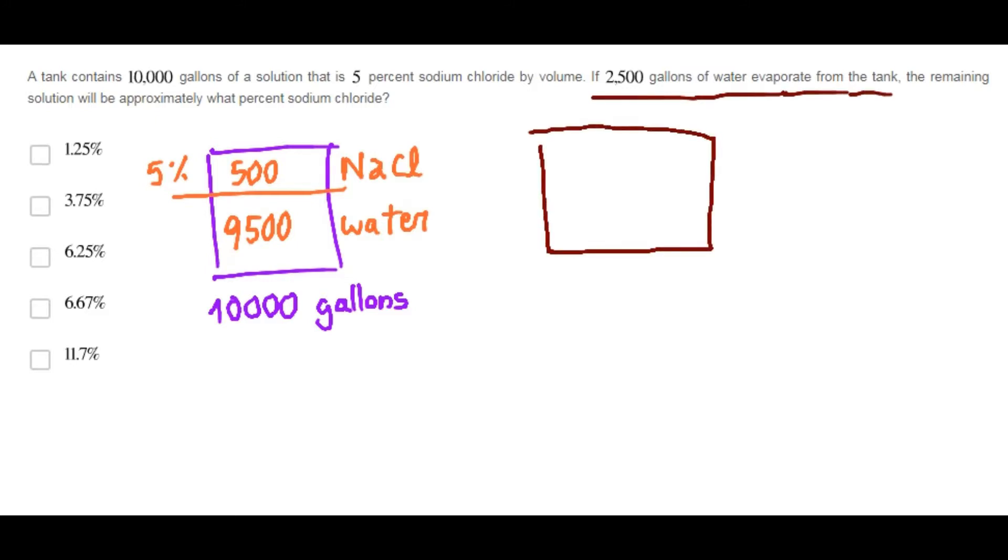Therefore, now there is 7,000 gallons of water and sodium chloride stays the same, 500 gallons. The new mixture contains 7,500 gallons.